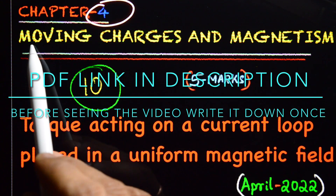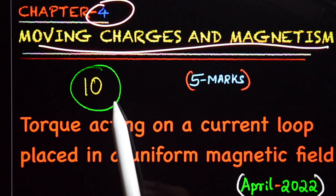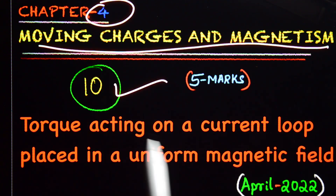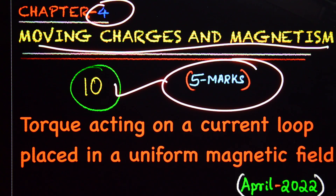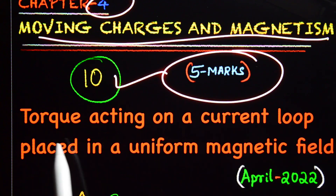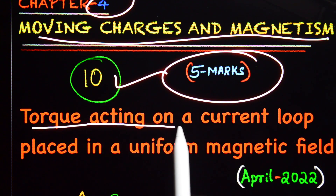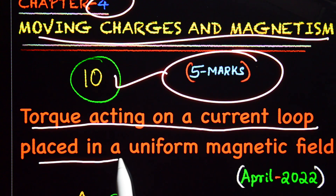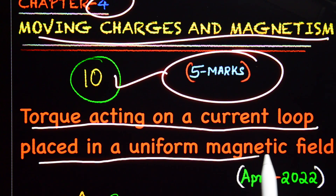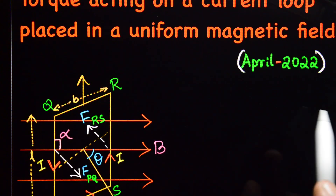Chapter 4: Moving Charges and Magnetism. This is our 10th topic and it is a five-mark topic. The topic is the torque acting on a current loop placed in a uniform magnetic field — this appeared in April 2022.